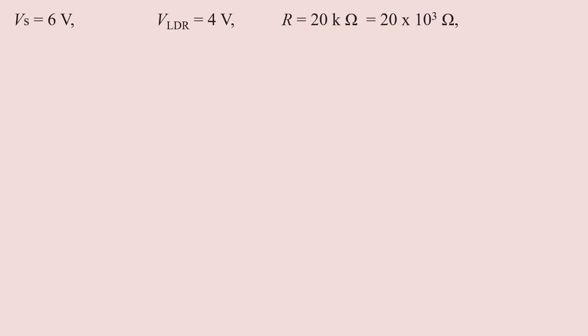The fixed resistor R is equal to 20 × 10³ ohms. The total potential difference V equals V_R plus V_LDR. For the fixed resistor, V_R equals V_S minus V_LDR.